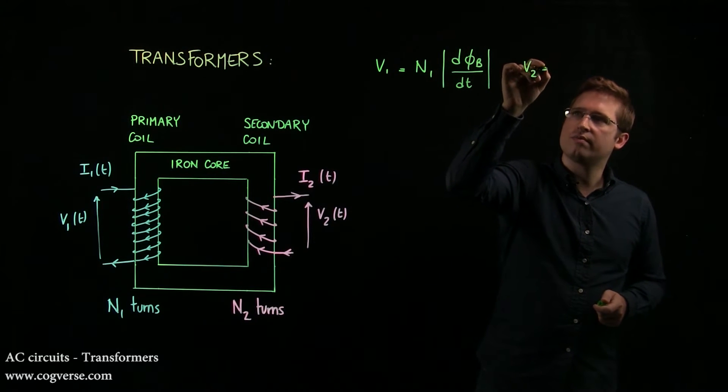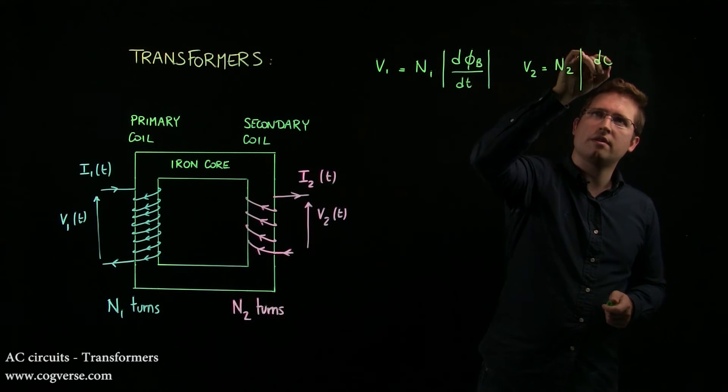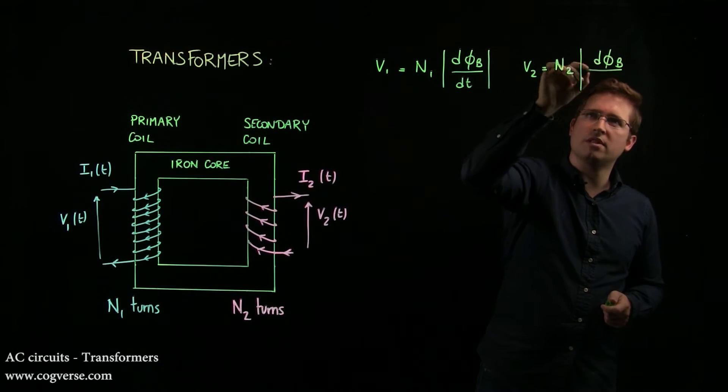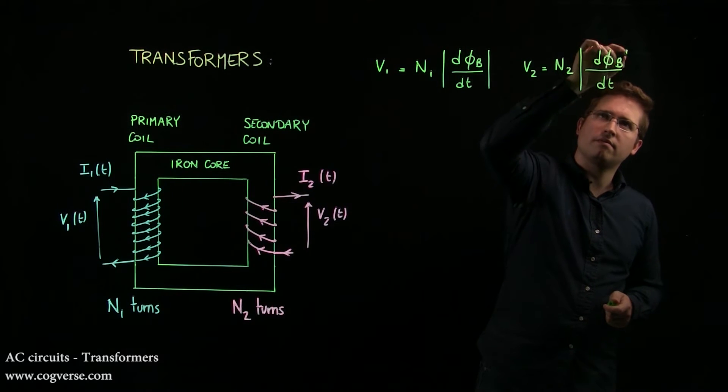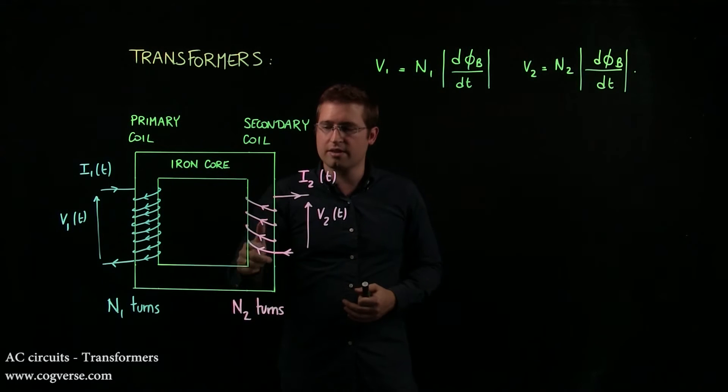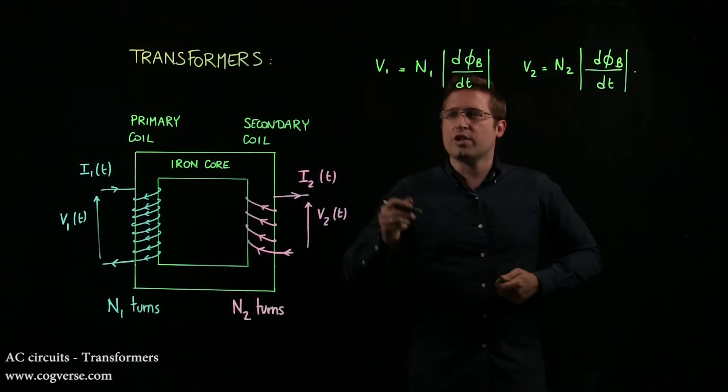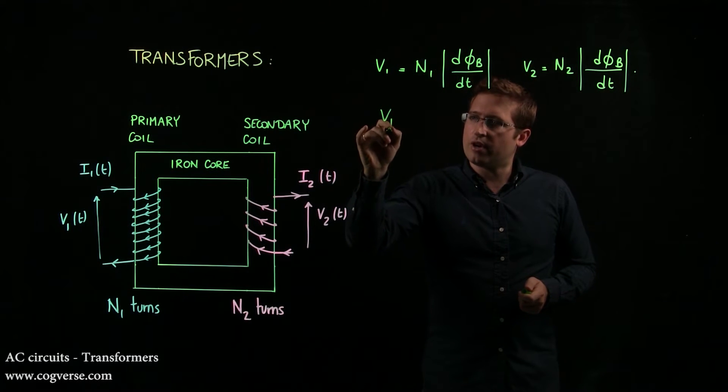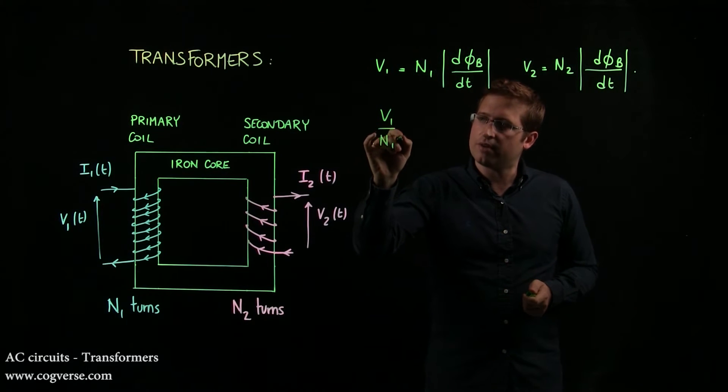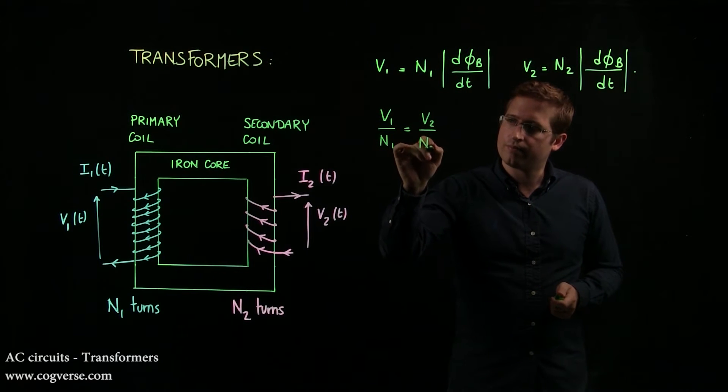And V2 is equal to N2 absolute value of d phi b over dt. But these two quantities are the same, again, because the magnetic field lines are trapped inside the iron core. So we can write that V1 over N1 is equal to V2 over N2.